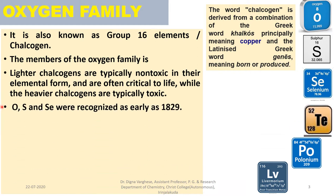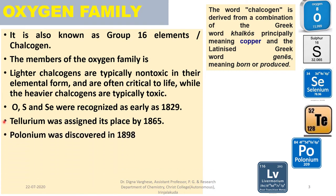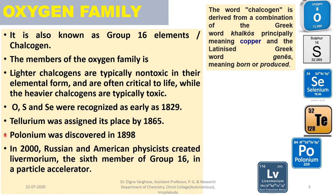Oxygen, Sulphur, and Selenium were recognized as early as 1829. Tellurium was assigned its place by 1865. Polonium was discovered in 1898. In 2000, Russian and American physicists created Livermorium, the sixth member of Group 16, in a particle accelerator.